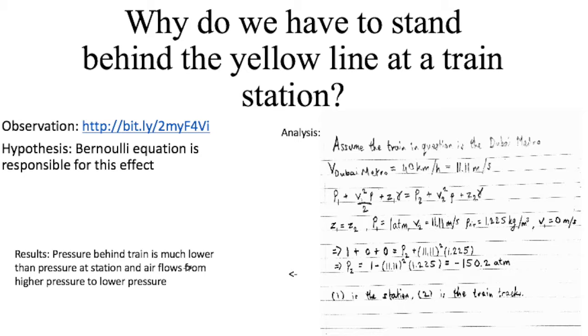We then said that pressure one is one atmosphere, Z1 is equal to Z2, velocity two is 11.11, rho density of air is 1.225 kilogram per meter cubed, and velocity one is equal to zero meters per second.